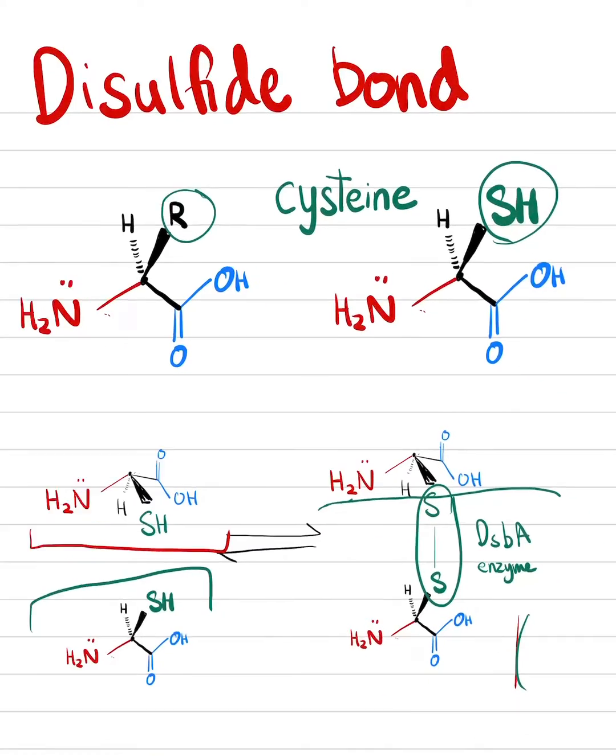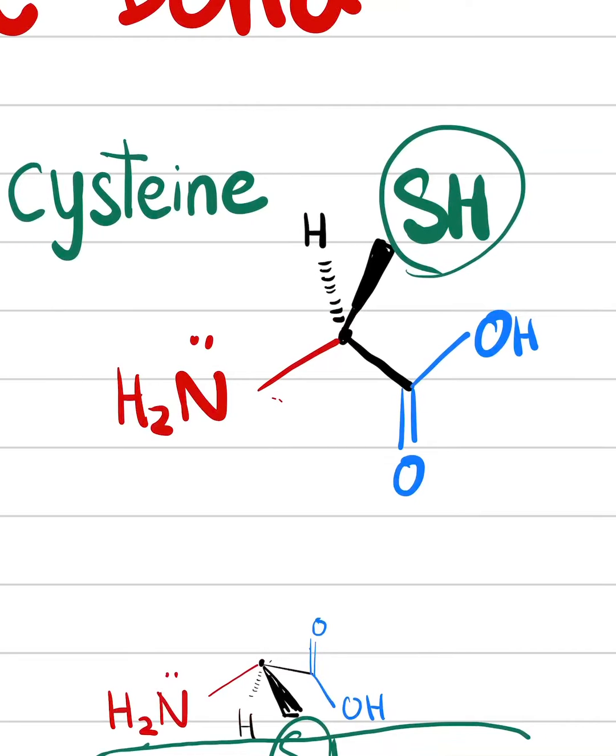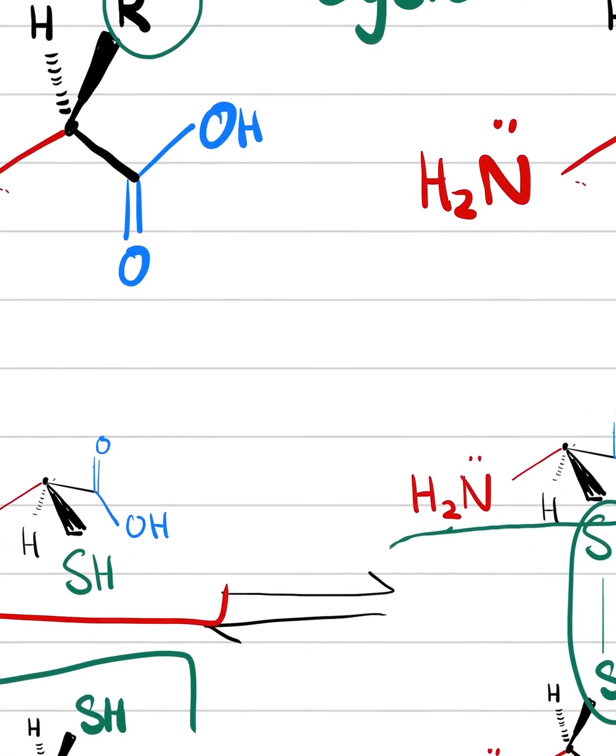And the key to that is disulfide bonds and a specific amino acid called cysteine, which is characterized by its R group, or side chain having a thiol group, the SH, sulfide and hydrogen.